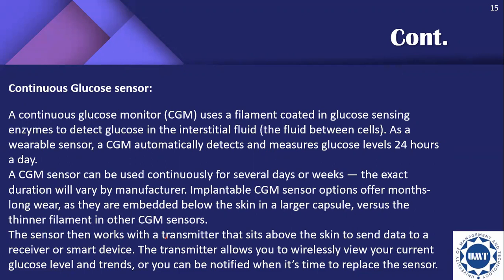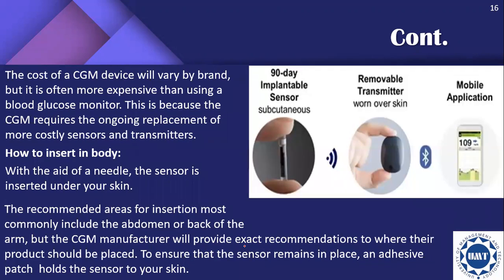The sensor works with a transmitter that sits above the skin to send data to a receiver or smart device, allowing you to wirelessly view your current glucose level and trends, or be notified when it's time to replace the sensor. The cost of a CGM device varies by brand but is often more expensive than a standard blood glucose monitor, due to the ongoing replacement of costly sensors and transmitters.